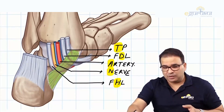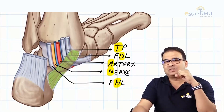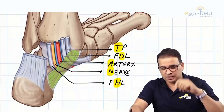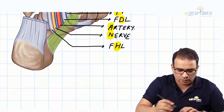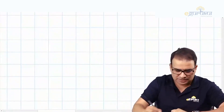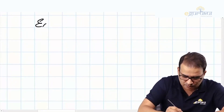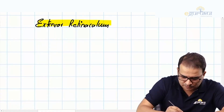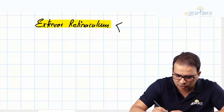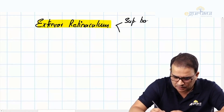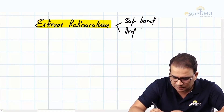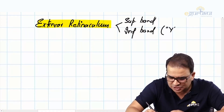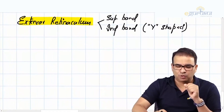The next one is the extensor retinaculum. Unlike the flexor retinaculum, it is not a single band — we have two bands: a superior band and an inferior band. The inferior band is actually Y-shaped.